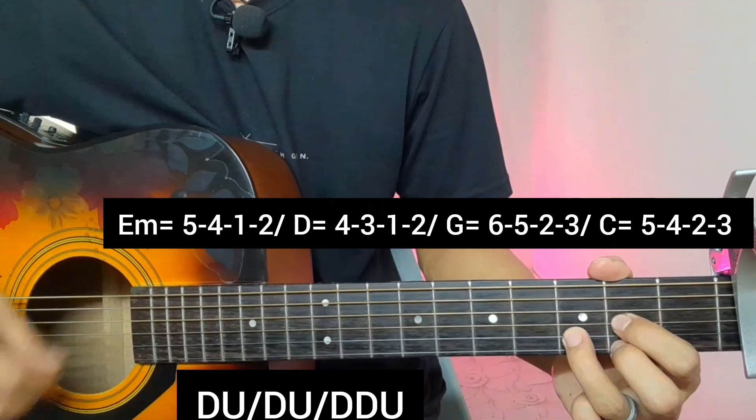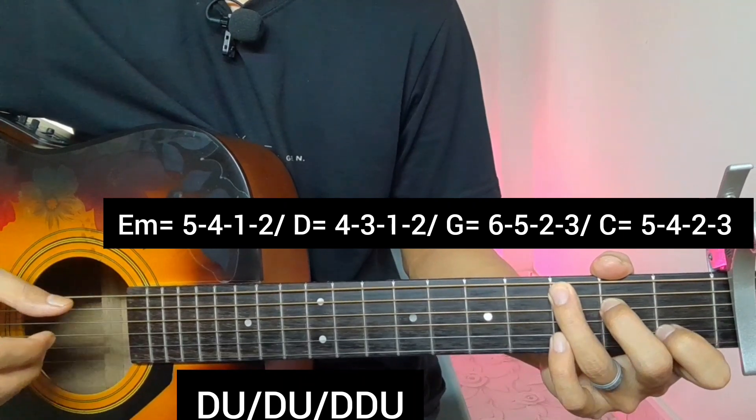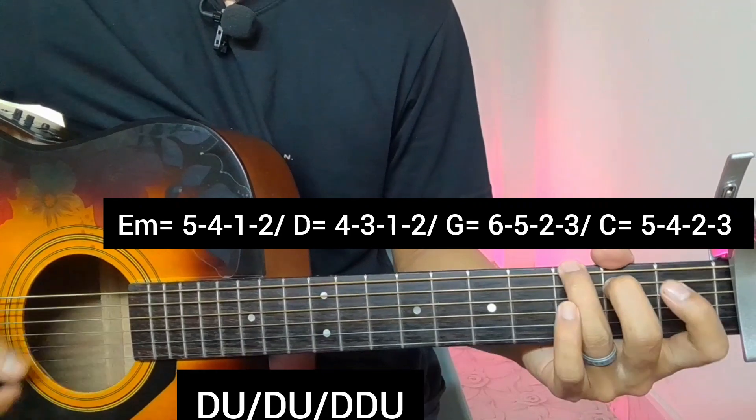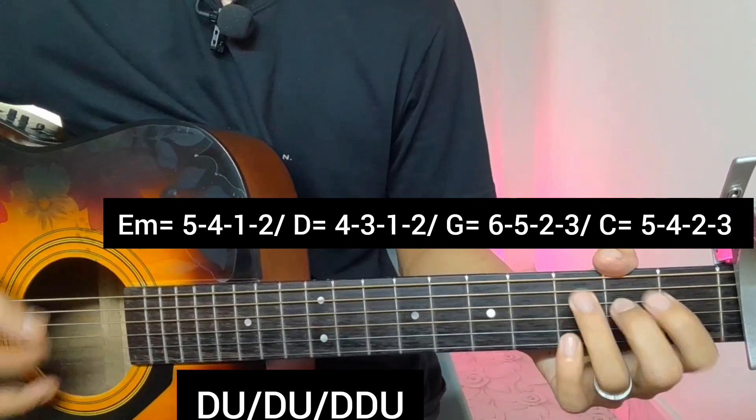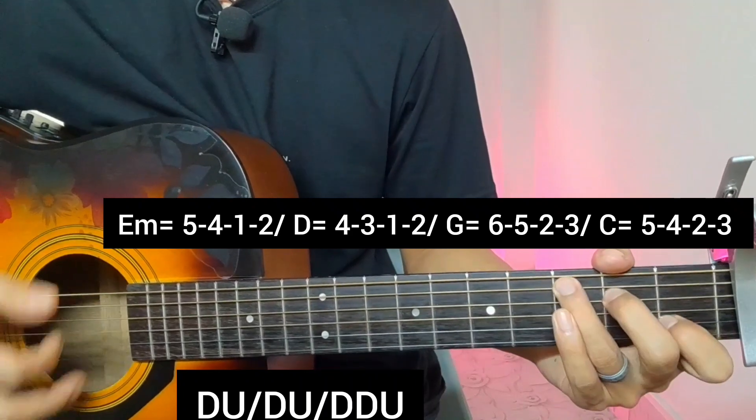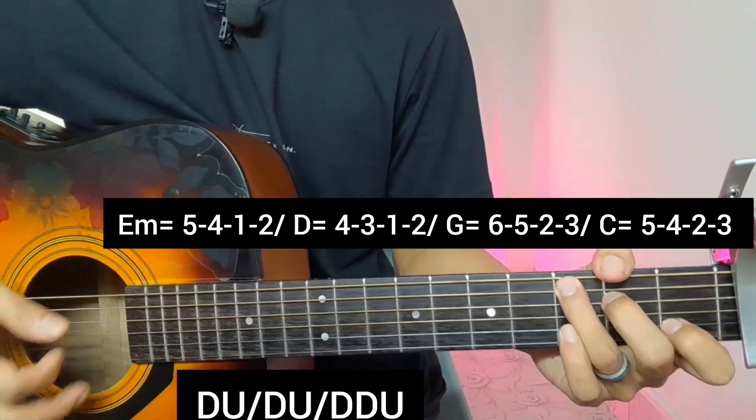The strumming pattern is: down, mute, down, mute, down, down, down, down, down, up. Down, mute, down, down, down, down, down, down, off. This strumming pattern can be used with the same chord progression.